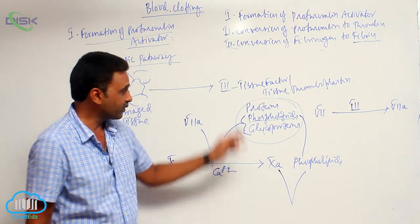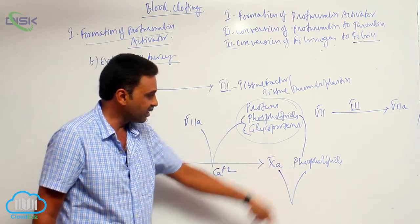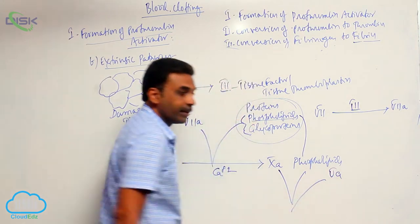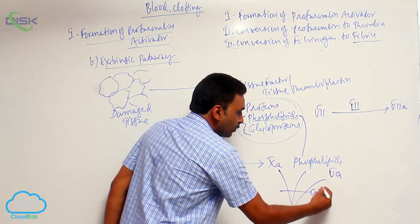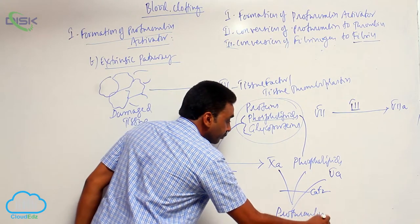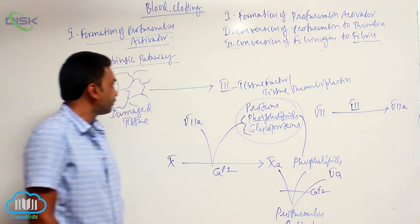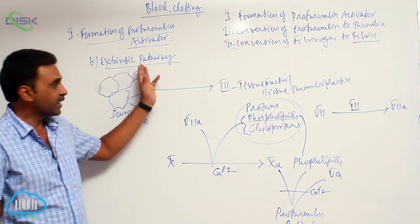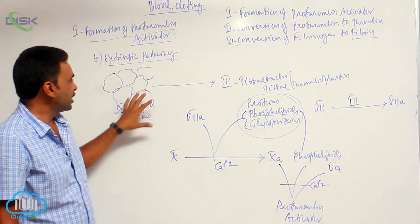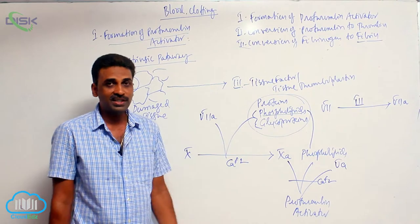This is the extrinsic pathway. The phospholipids present inside Factor III, along with activated Factor V, in the presence of calcium ions, will finally produce prothrombin activator. So the extrinsic pathway is quite simple. Whenever tissues are damaged, from those damaged tissues, Factor III is released.